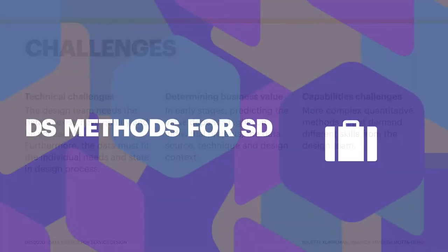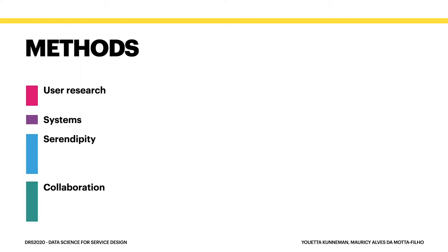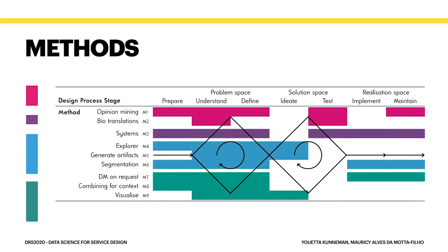Let's take a look at the guide. There are four categories: methods that aid in user research, methods that model systems, methods that contribute to creativity, and a way of collaborating between data scientists and service designers. We'll discuss these nine methods very briefly.